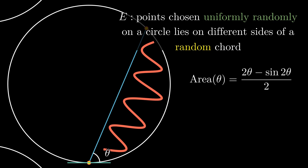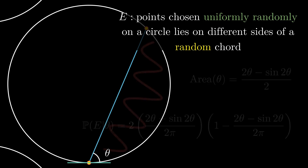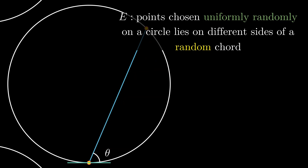Hence the probability that a random point lies in this region is this value divided by π, and the probability of a point not lying in this region is 1 minus this value. We now only have to weigh these expressions according to the different density functions based on how the random chord was drawn.